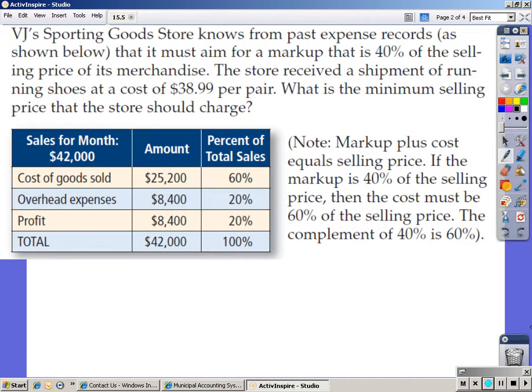Let's move on. Our one and only example. VJ's sporting goods store knows from the past expense records as shown below that it must aim for a markup that is 40% of the selling price of its merchandise. The store received a shipment of running shoes at a cost of $38.99 per pair. What is the minimum selling price that the store should charge?